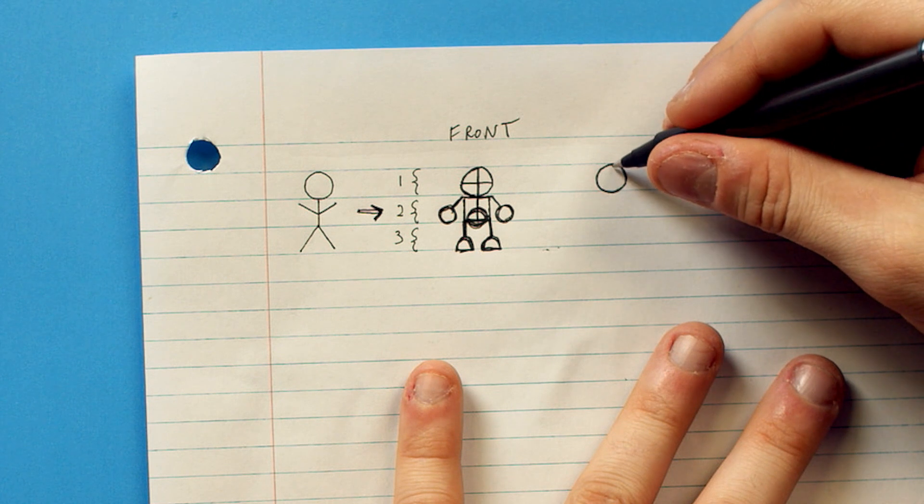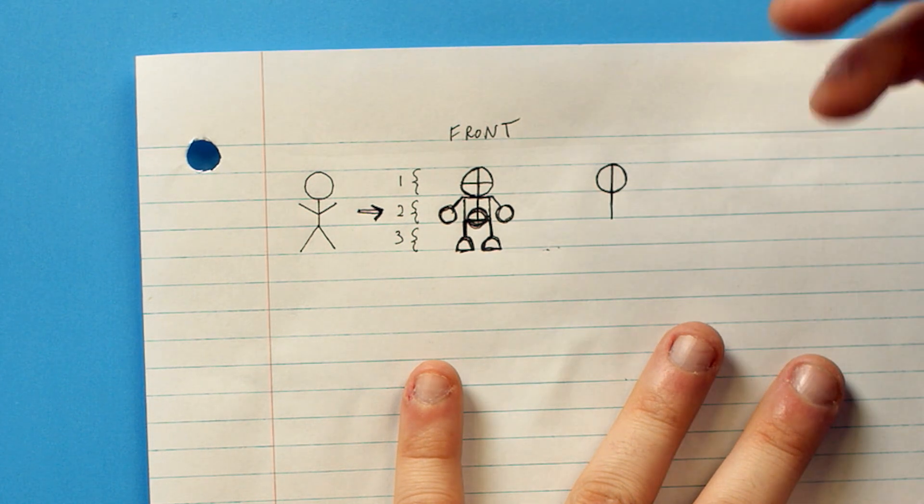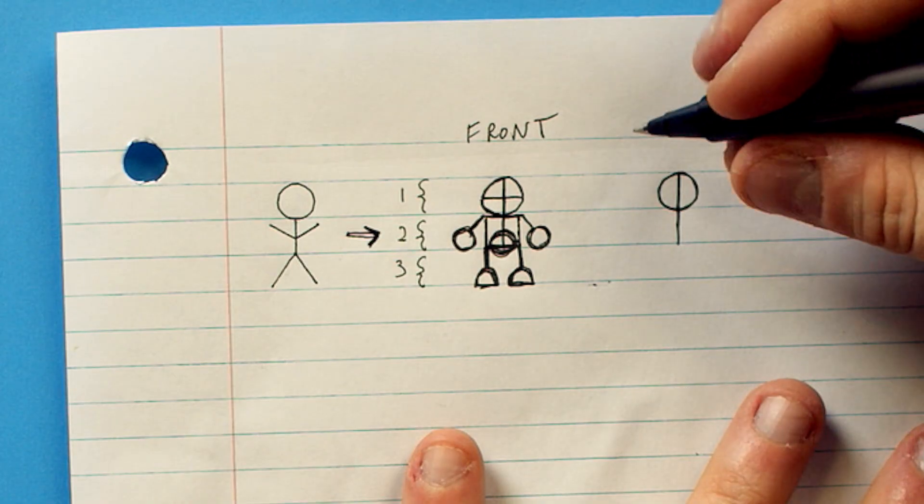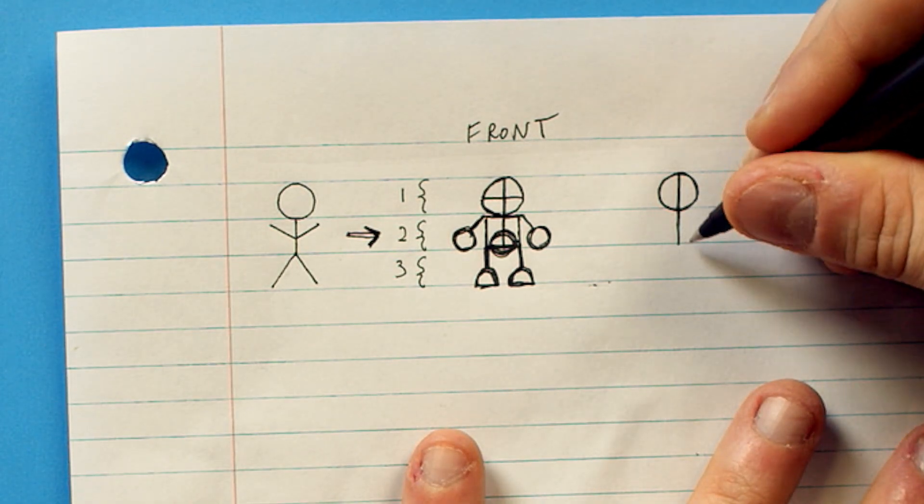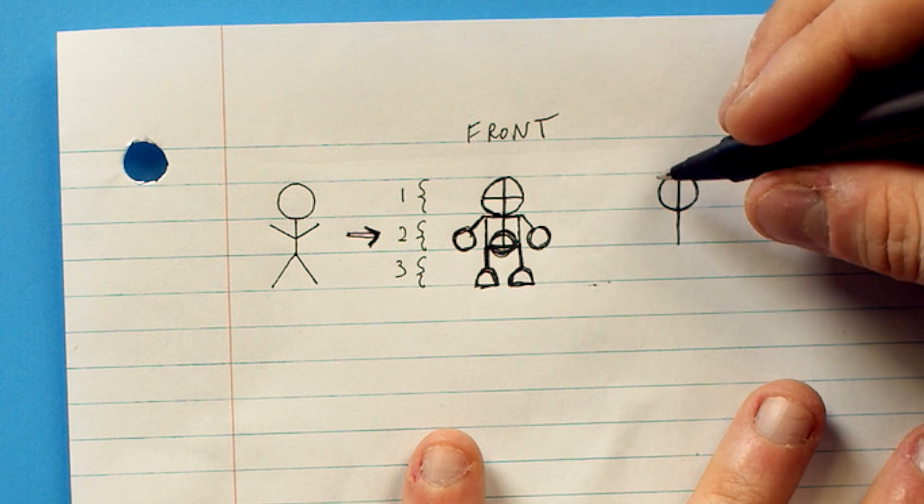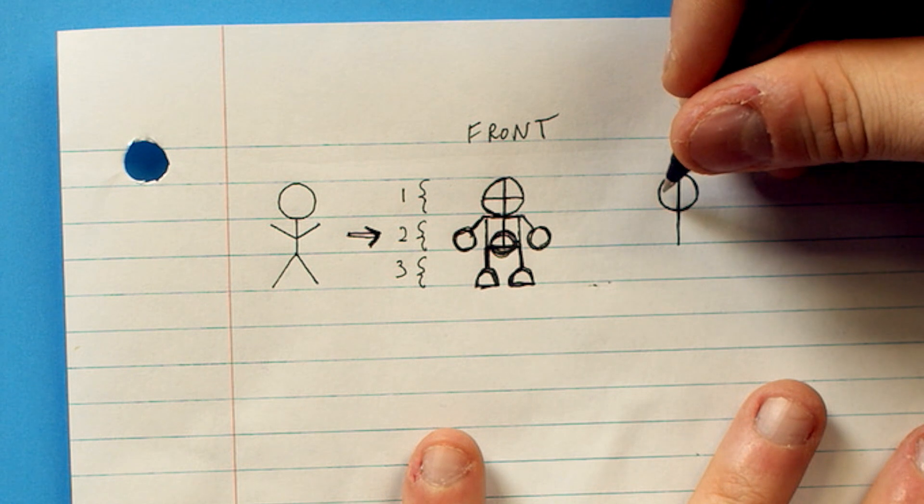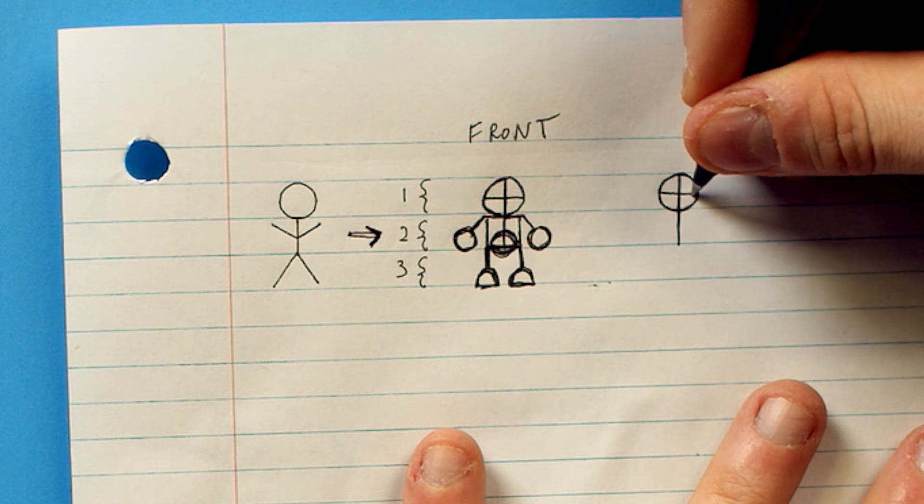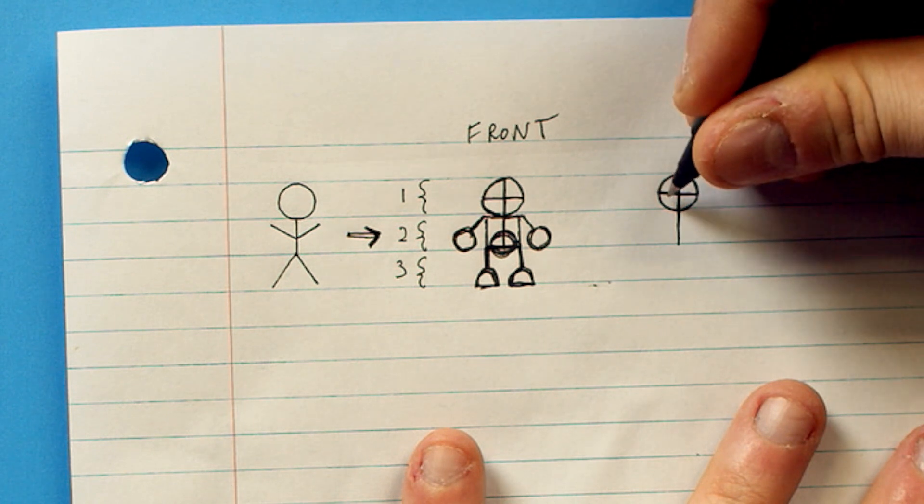We're gonna draw a line all the way down the center for his spine again. Now, he's gonna be very static, but we can always add more movement later. So, we've got his spine now. And we wanna draw that division line for his eyes. Even if he's looking forward, we still wanna know how to place his eyes in the front there.